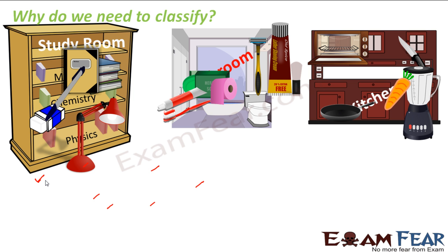So we classified the things depending upon their characteristics — whether an item is used for studying, for cooking, or for toiletry purposes. Now if your friend comes and asks for the physics book, you won't search the entire house; you'll go straight to the study room. You used to take an hour searching; now you take much less time, searching only among the things in the study room.